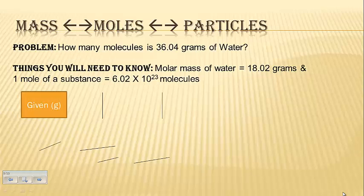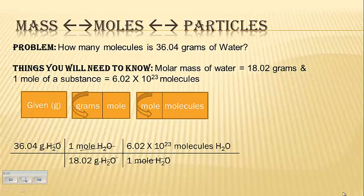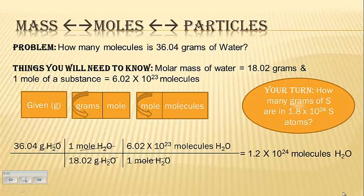Then when you come back, you should have this set up. Given is in grams, then a gram to mole domino, and mole to molecules. Turn them counterclockwise, plug in the numbers, cancel out the units. Using your calculator, put in the numbers using parentheses to ensure the right answer, and you should get 1.2 times 10 to the 24th molecules. You may want to practice putting that into your calculator to make sure that you get the same answer as me. Then, guess what? It's your turn. Here you go. How many grams of sulfur are in 1.8 times 10 to the 24th sulfur atoms?